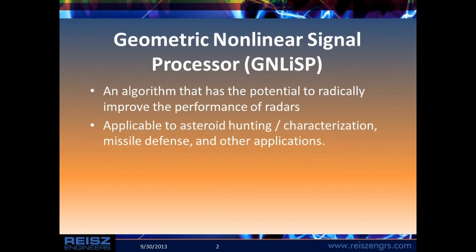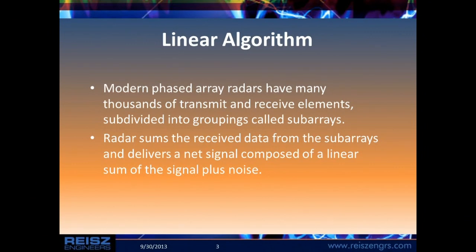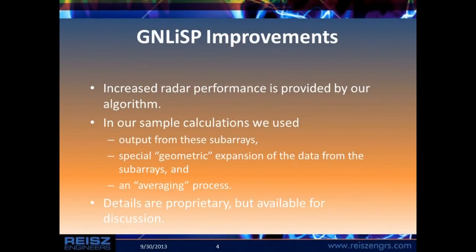The linear algorithm currently used by most modern phased array radars — which have thousands of transmit and receive elements — takes the subarray outputs and combines those in a linear fashion to estimate target position. What we have is an algorithm which takes a nonlinear process to do that same activity and will increase the radar performance by about double. Our sample calculations used outputs from these subarrays with a geometric expansion of the data and an added averaging process.